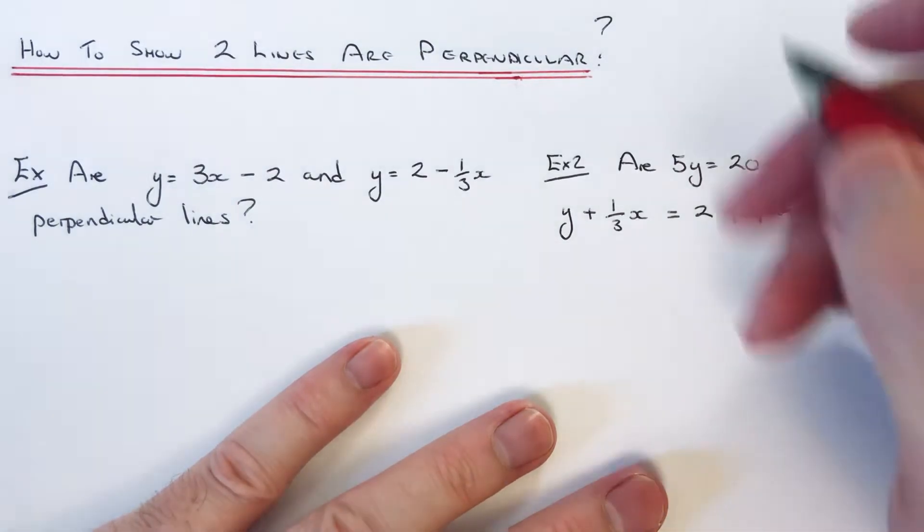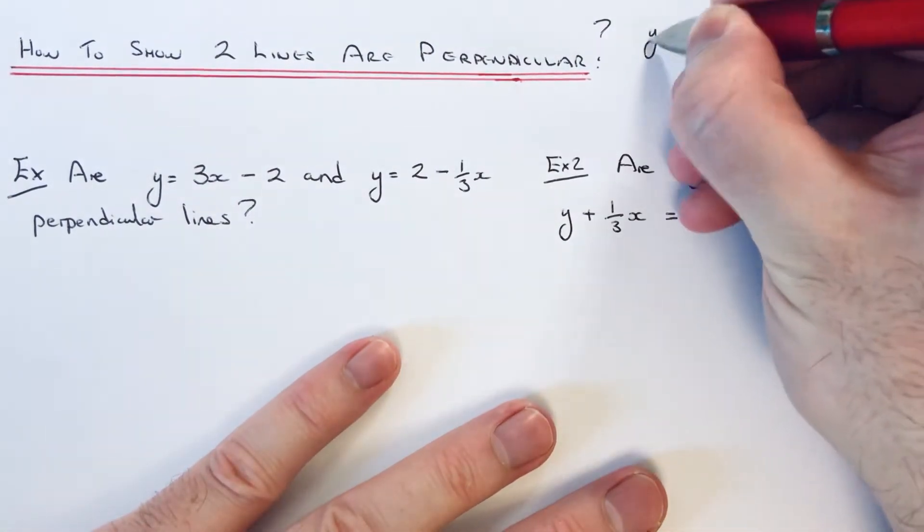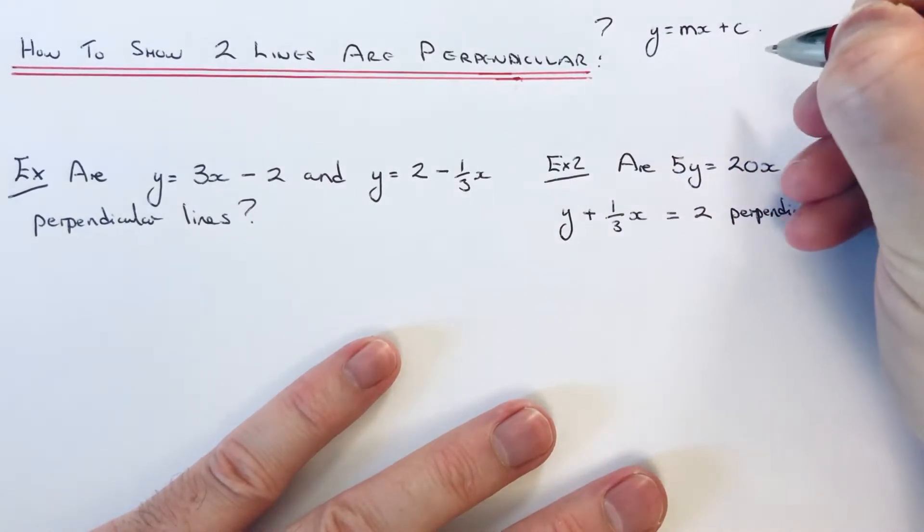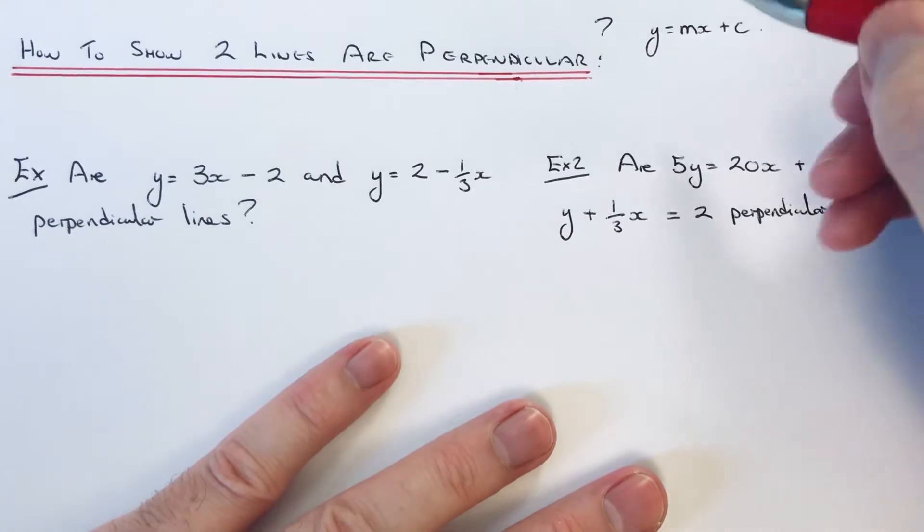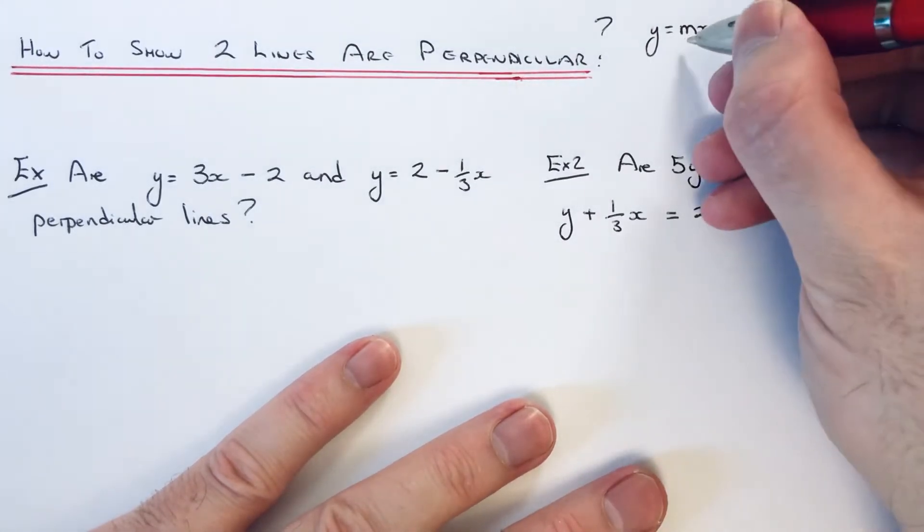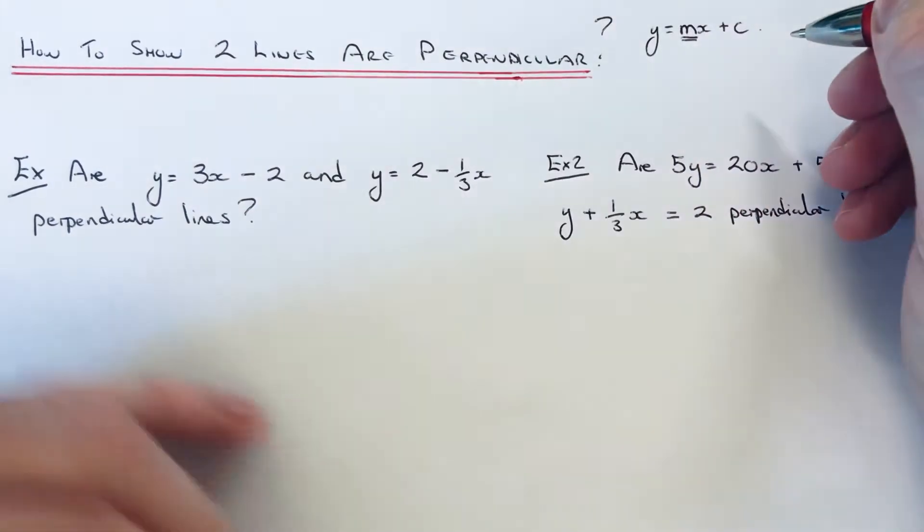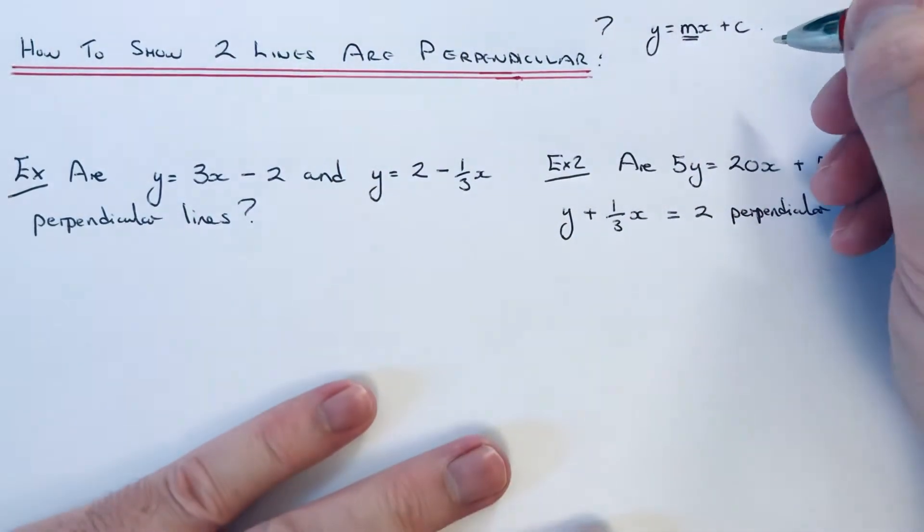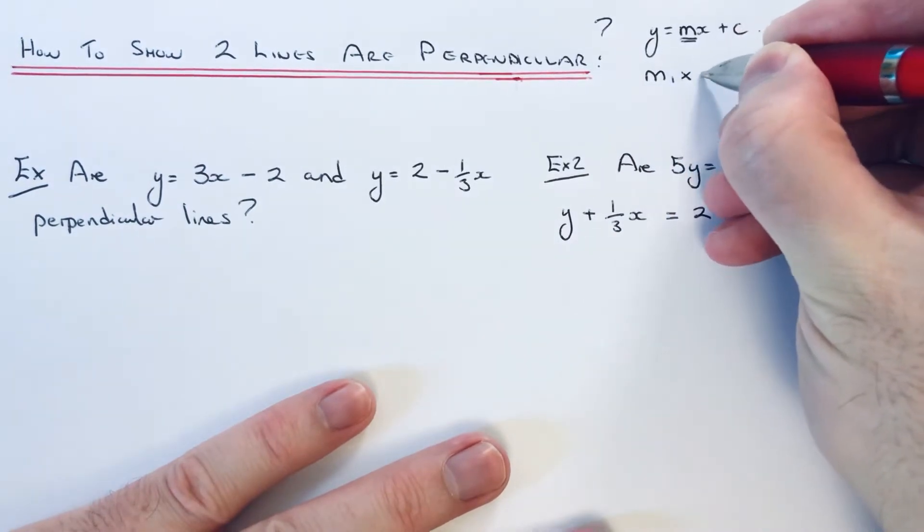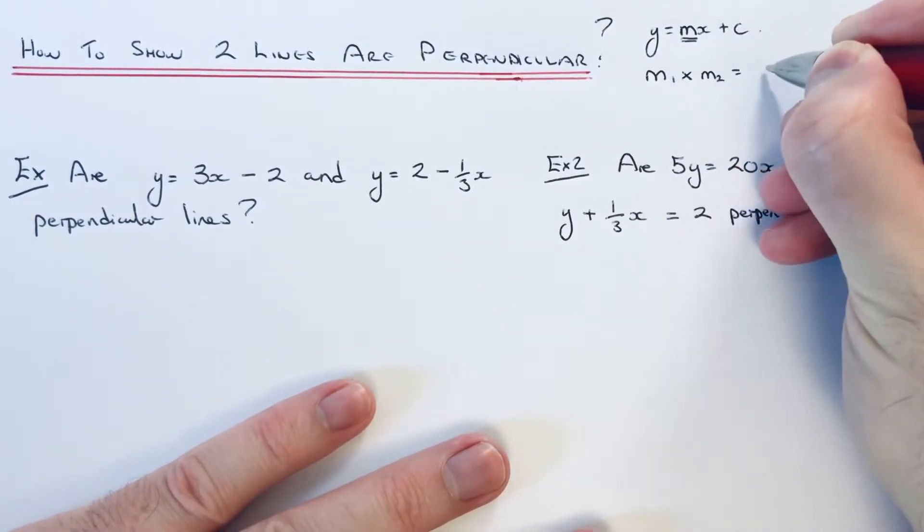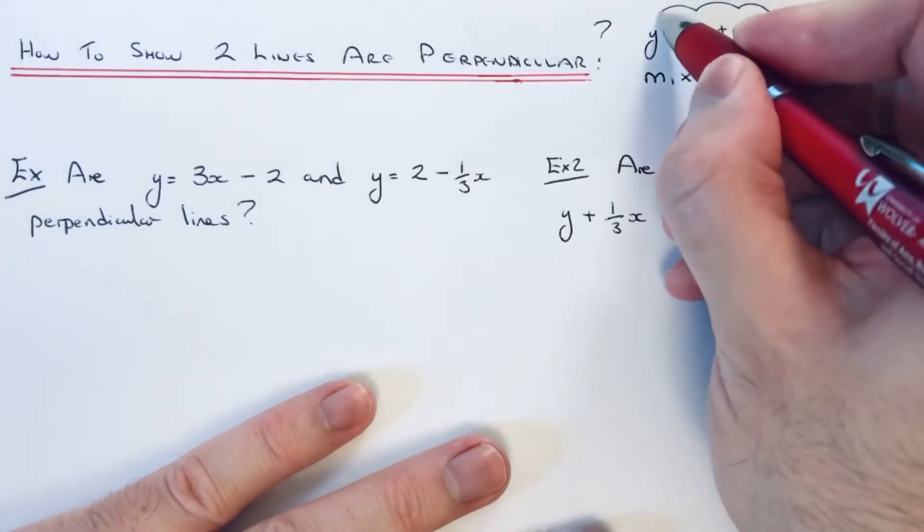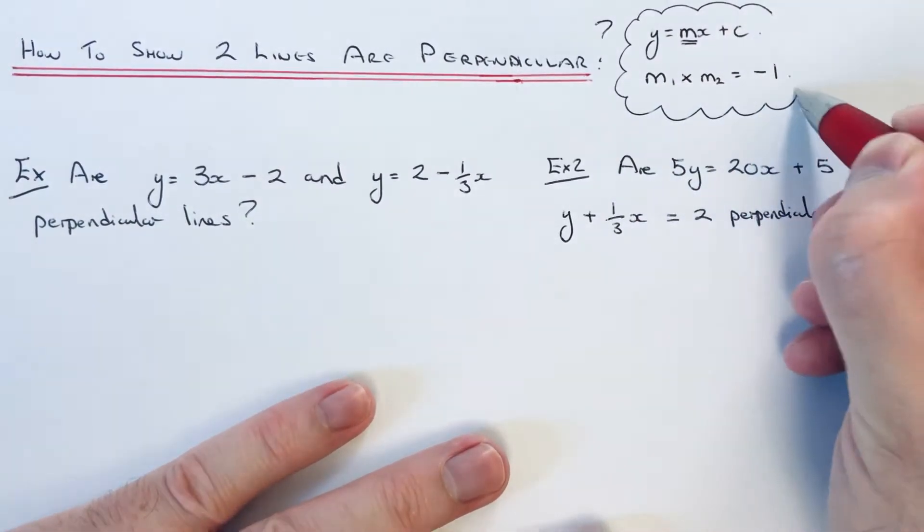First of all you need to make sure the two lines are in the form y=mx+c. And then you just need to work out the gradient of both lines. The gradient is the number before x. And if you multiply the gradient of both your lines together and it comes out to minus 1, then the two lines will be perpendicular to each other.